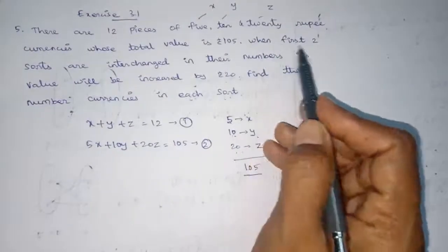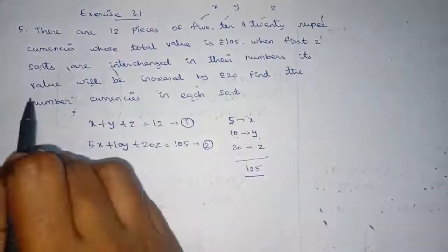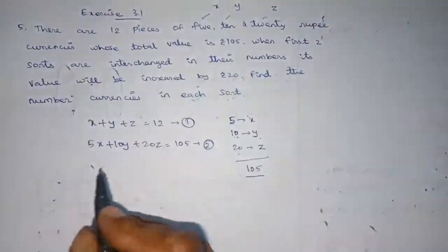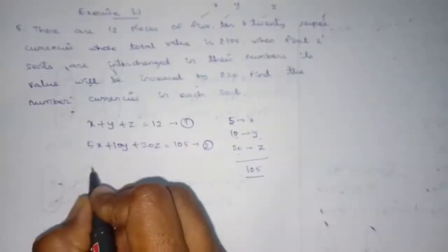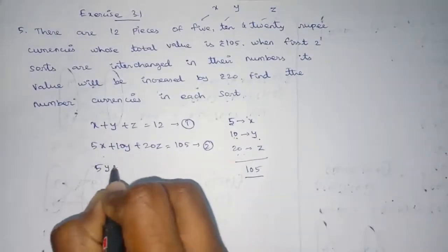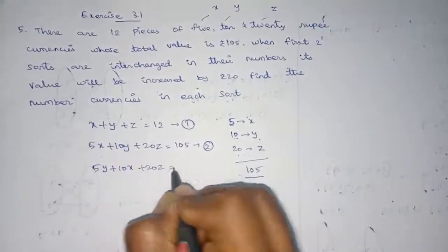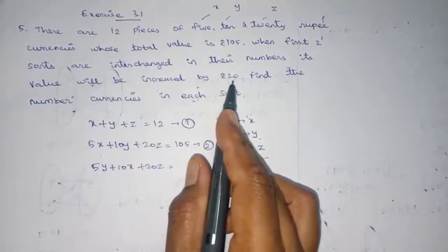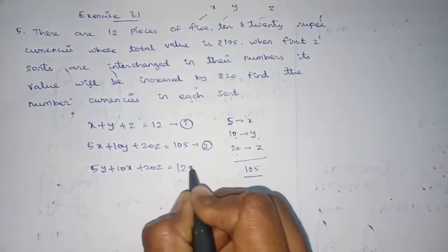When the first two sorts are interchanged in their numbers, the value will be increased by 20. So we interchange the first two sorts, giving us 5Y plus 10X. The value increases from 105 to 125.